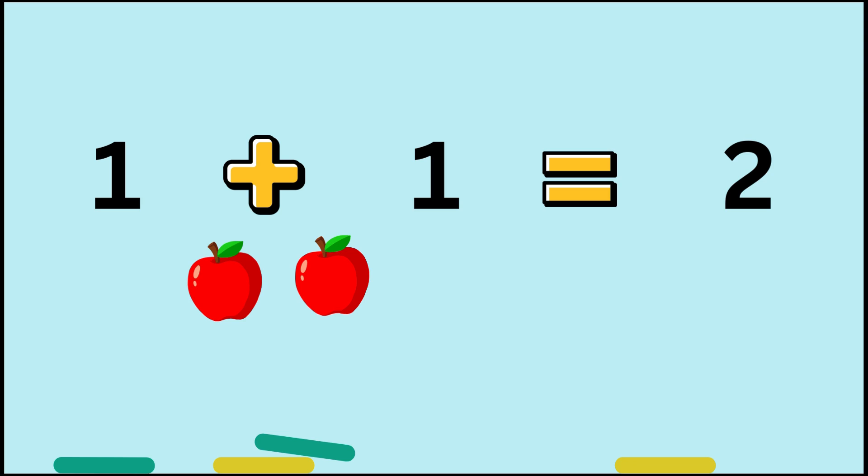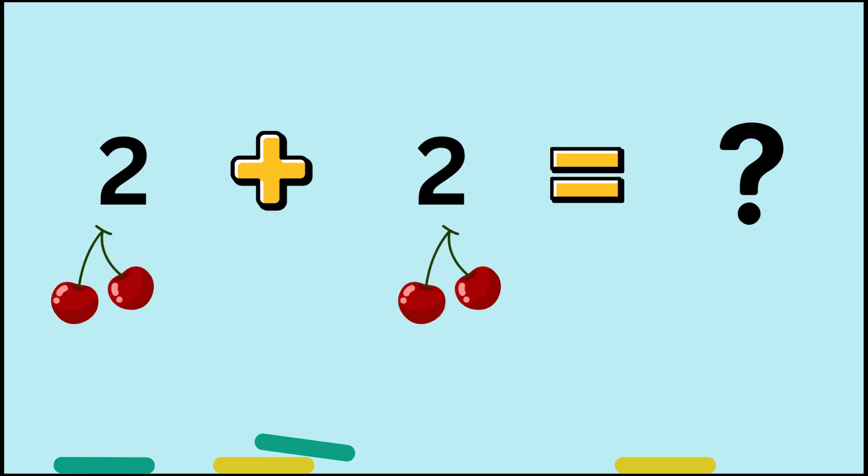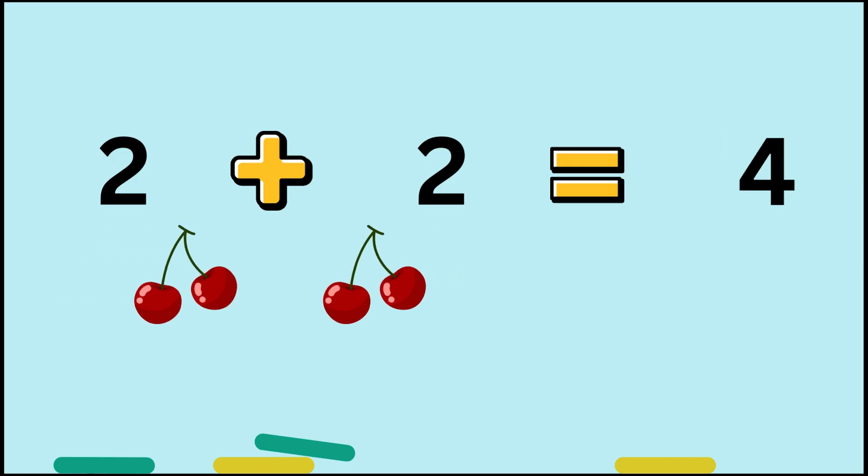And this is only the start. These will keep getting harder. 2 and 2 makes... There's 2 cherries here and 2 cherries there. Altogether, they make 4. Awesome job, guys.